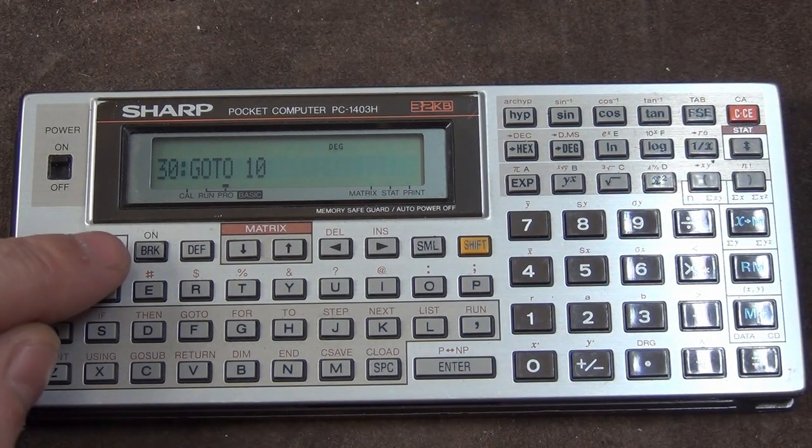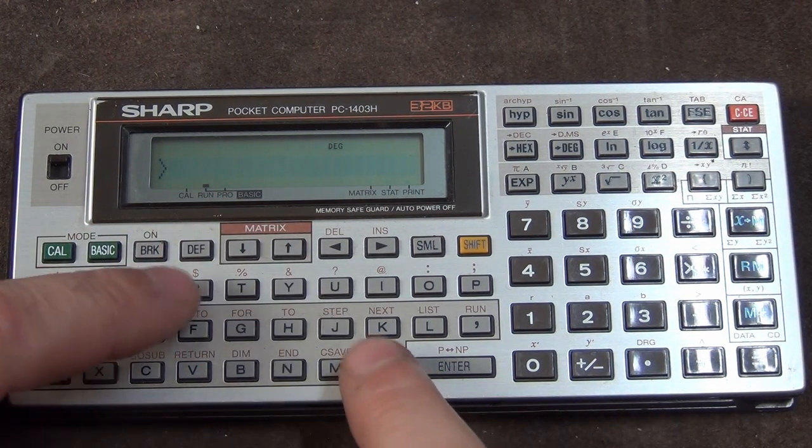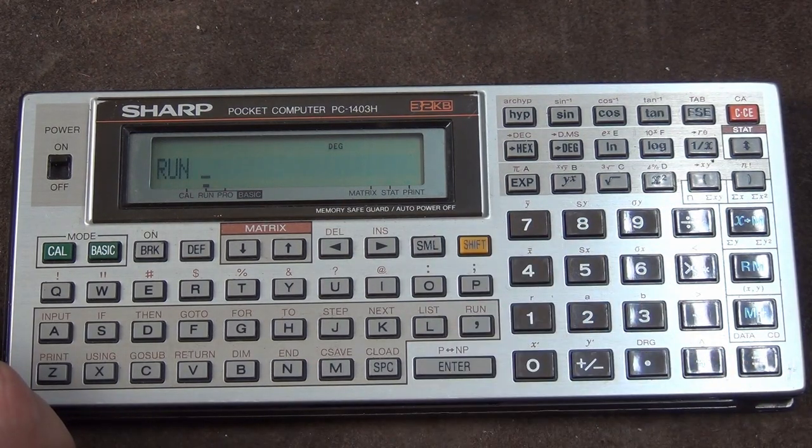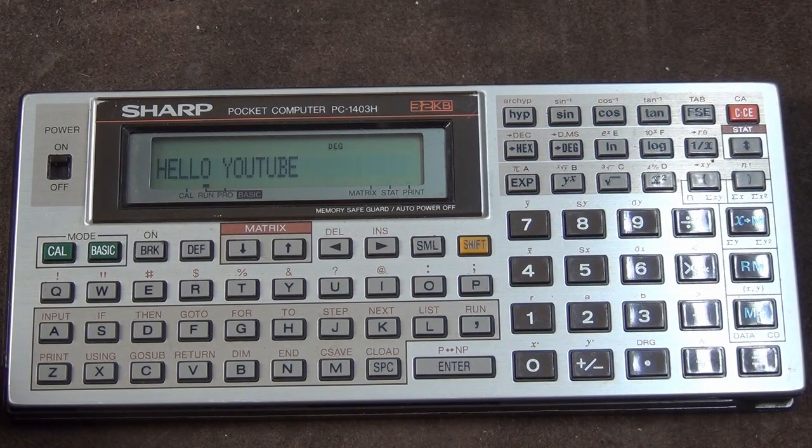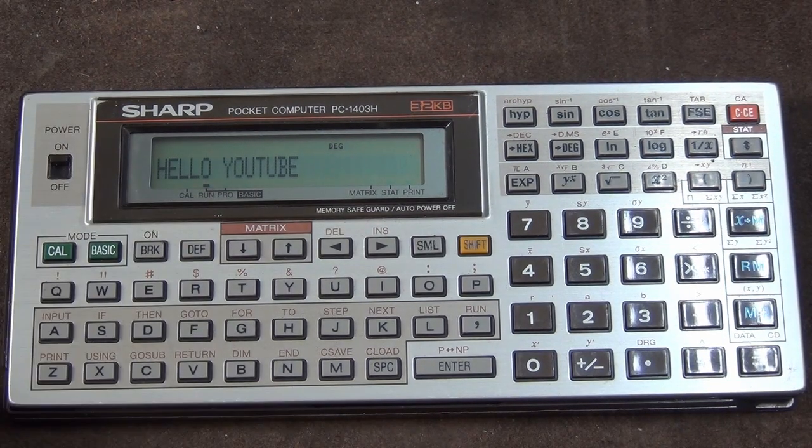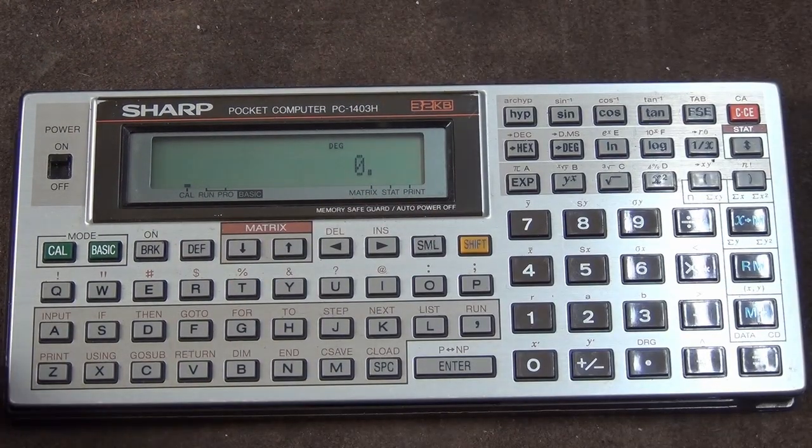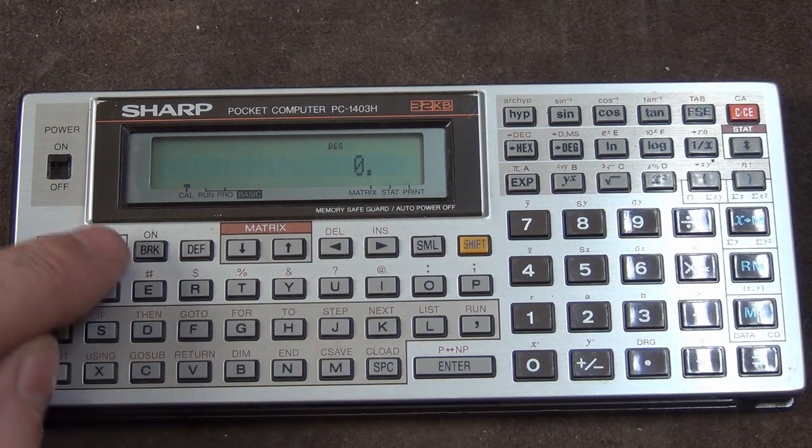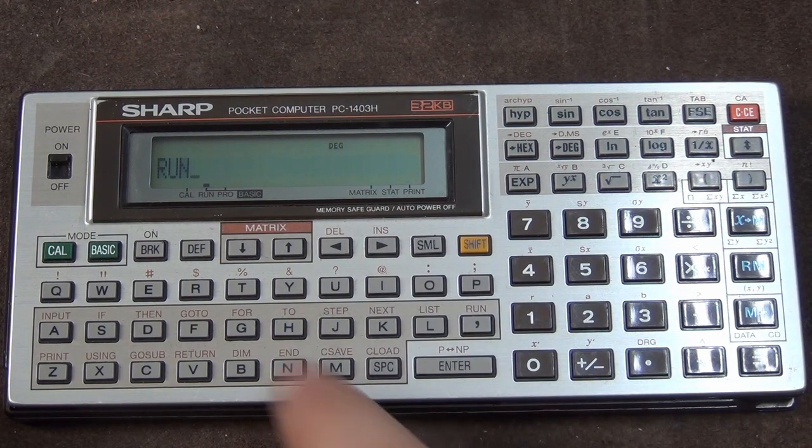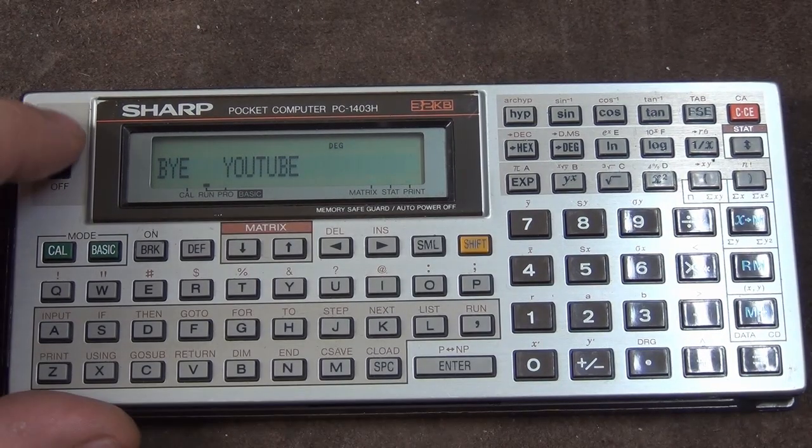Now we can see our program work. If it works. If you push here again, we go to the run mode. Now we can write run. Or we can push shift and this. And he writes run for us. We push enter. He says, hello, YouTube. Beeps two times and goes back to the first row, which says, hello, YouTube. Hello, YouTube. I've modified the program a little bit. And now we can go to the basic run mode. Type run. Not run. Run. Bye YouTube. Bye YouTube. Bye YouTube.